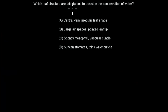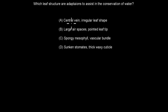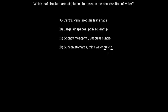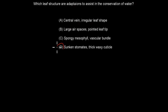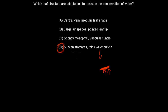Next: Which leaf structures are adaptations that assist in the conservation of water? A: central vein, irregular leaf shape. B: large airspaces, pointy leaf tip. C: spongy mesophyll, vascular bundle. D: sunken stomates, thick waxy cuticle. The correct answer is D. The thick waxy cuticle prevents water from penetrating since water can't pass through a layer of fat. Sunken stomates prevent evaporation and transpiration by hiding the stomates. The other options are unrelated.